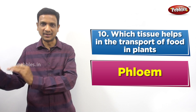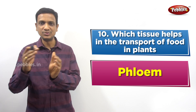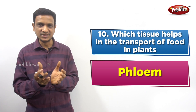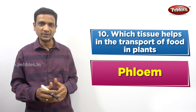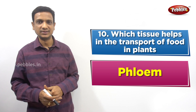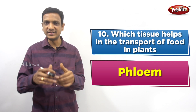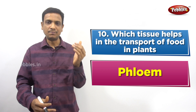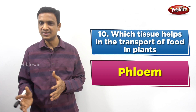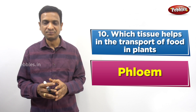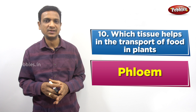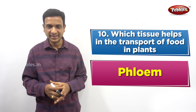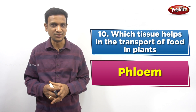Phloem carries food from one part to another. The food prepared in the leaf is carried to be stored at some other part. For example, in a carrot plant, food is stored in the root - so the prepared food is carried from leaf to root through the phloem, in a downward direction. Phloem can transport food both upward and downward, unlike xylem which transports water only upward from bottom to top.